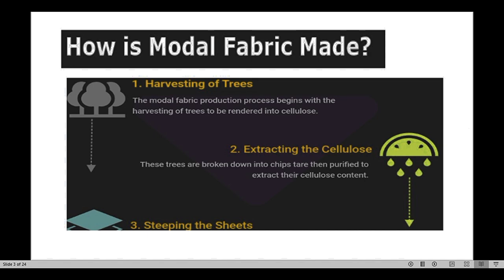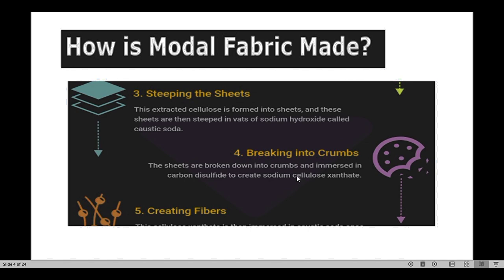Modal fiber consists of a vast amount of cellulose, like other natural fibers. The third step in the manufacturing process is stripping the sheets — the extracted cellulose is formed into sheets, and then those sheets are steeped in a vat of sodium hydroxide, also called caustic soda (NaOH). This is the stripping process of the fiber.